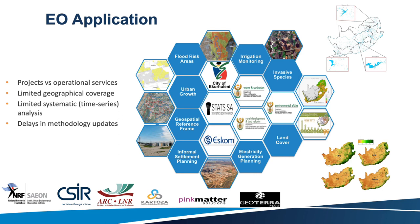Some limitations we're still faced with are that activities are more project-based rather than operational services. We are also limited in geographical coverage and processing — because of the storage and processing power required, people tend to do small projects around specific geographic areas, and very few products are countrywide in focus. This also brings limitations around time series analysis, especially when monitoring drought and climate change-related impact, and from a scientific side, the update of our methodologies also gets impacted.